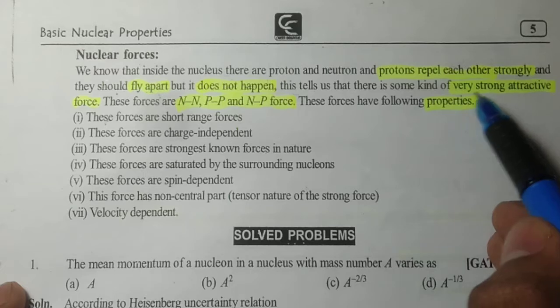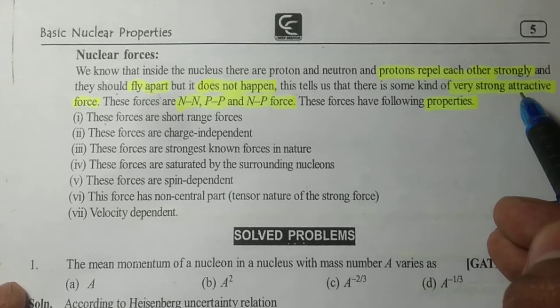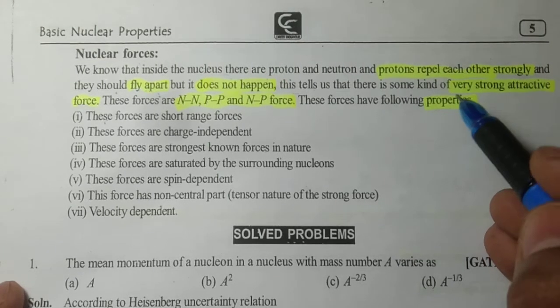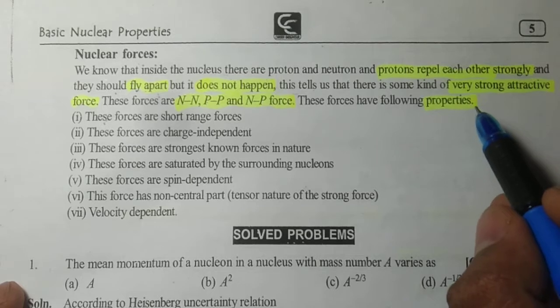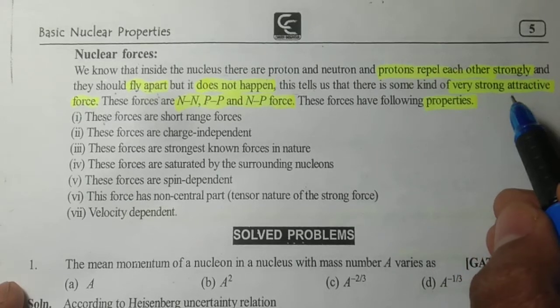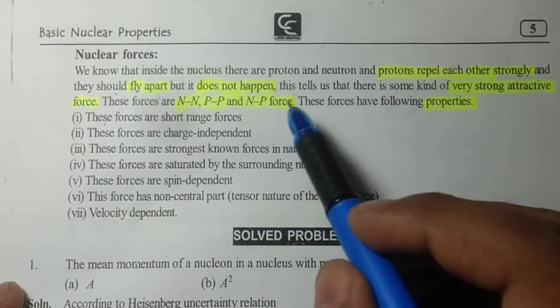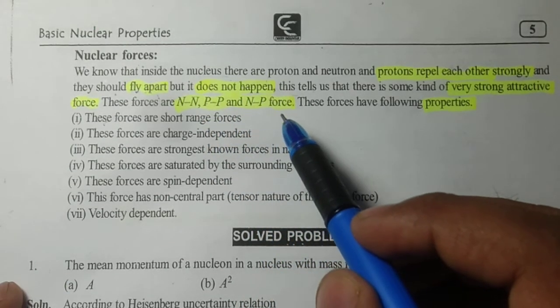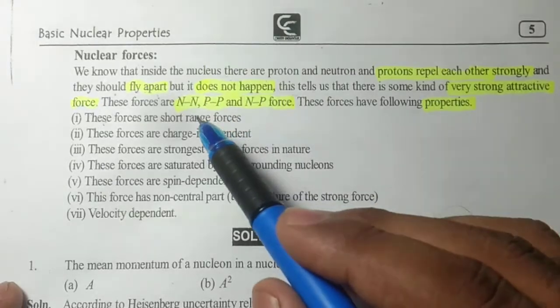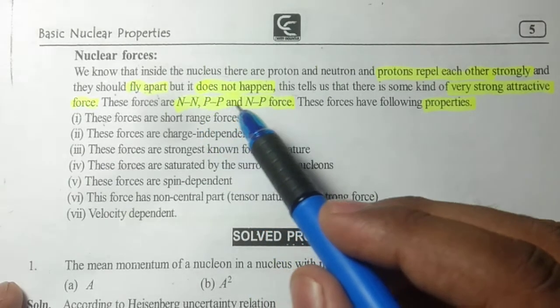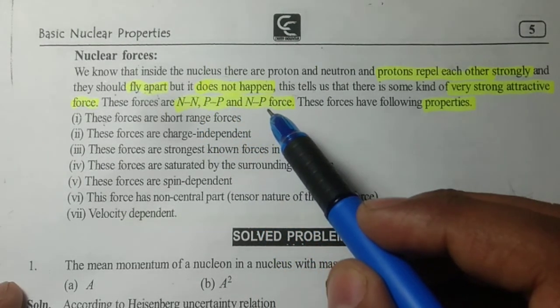This tells us that there is some kind of extra strong type of force. These forces are neutron-neutron force, proton-proton force, and neutron-proton force. Generally all these forces are of attractive nature.